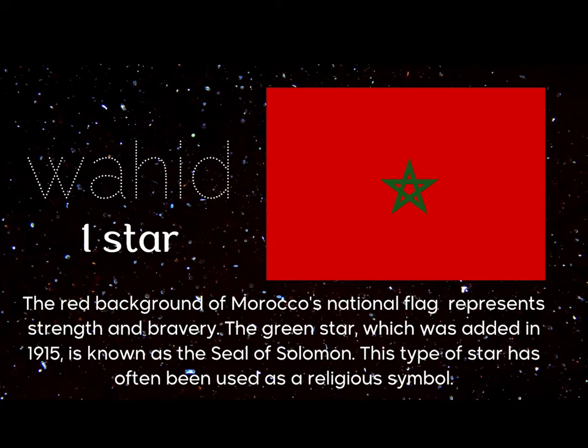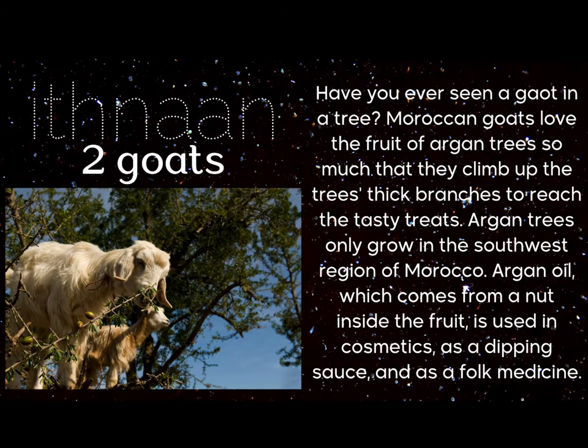The green star, which was added in 1915, is known as the Seal of Solomon. This type of star has often been used as a religious symbol. Two — iften. Two goats.